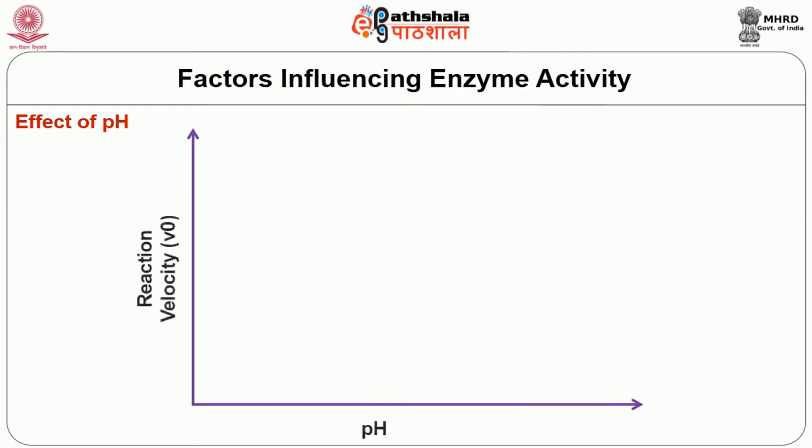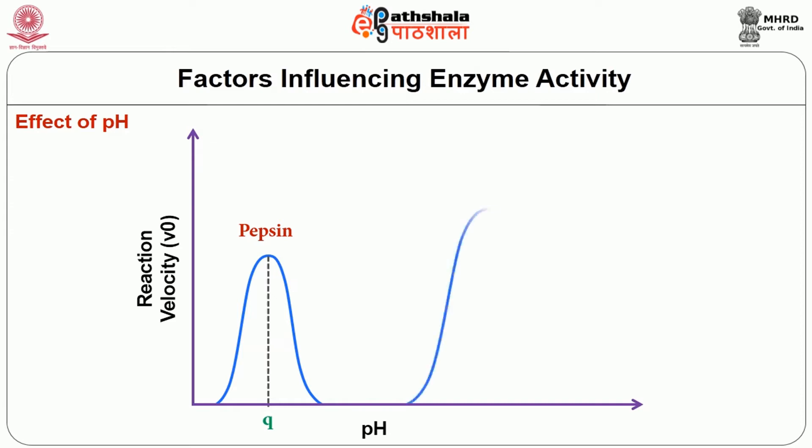Look at this graph. For pepsin the optimum pH is very different from pH 7. This characteristic graph is called a bell-shaped graph. The peak of the bell is the optimum pH, and on either side of the bell the enzyme is not in a suitable shape to promote active substrate binding. That is why every enzyme has an optimum pH at which its rate of activity is at its maximum.